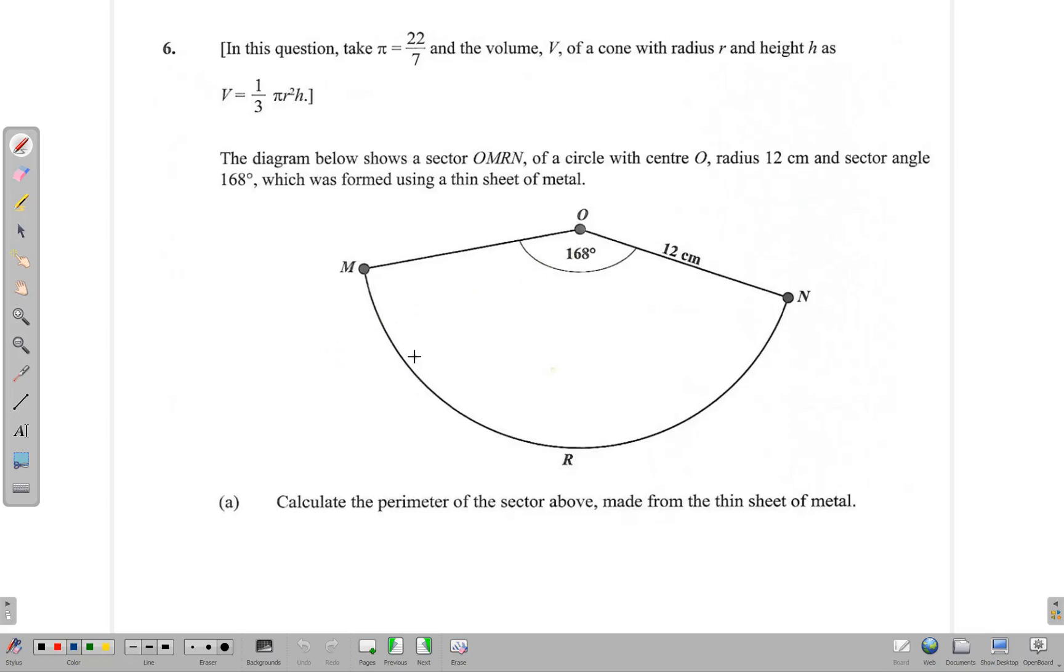To calculate the perimeter of the sector, we need to find the length of this arc here and add it to these two radii. We know that this side is 12, that's the radius, and because of that, this side is also 12.